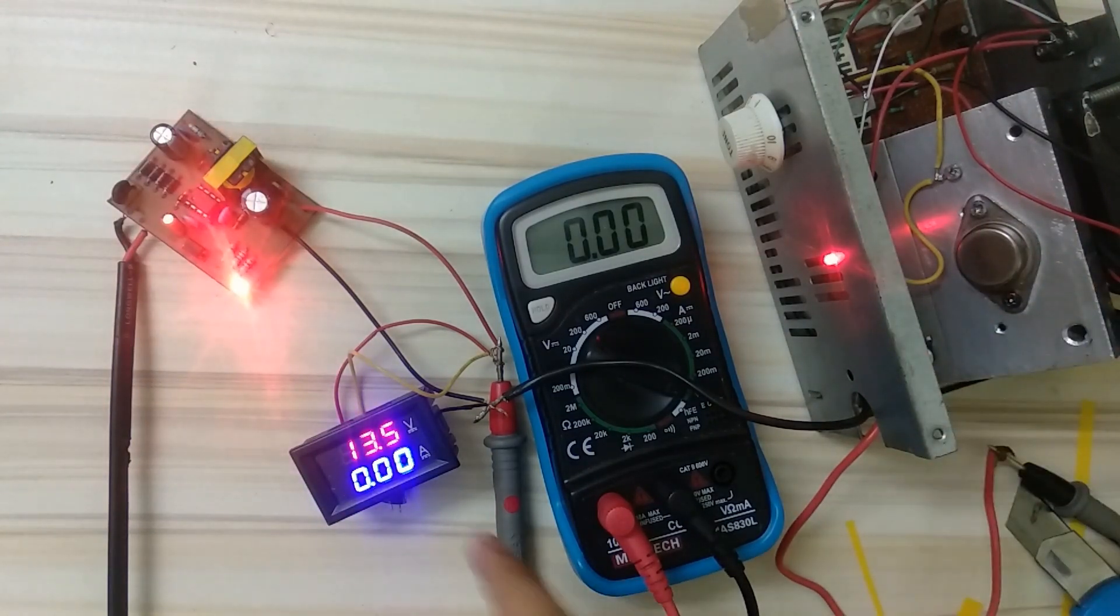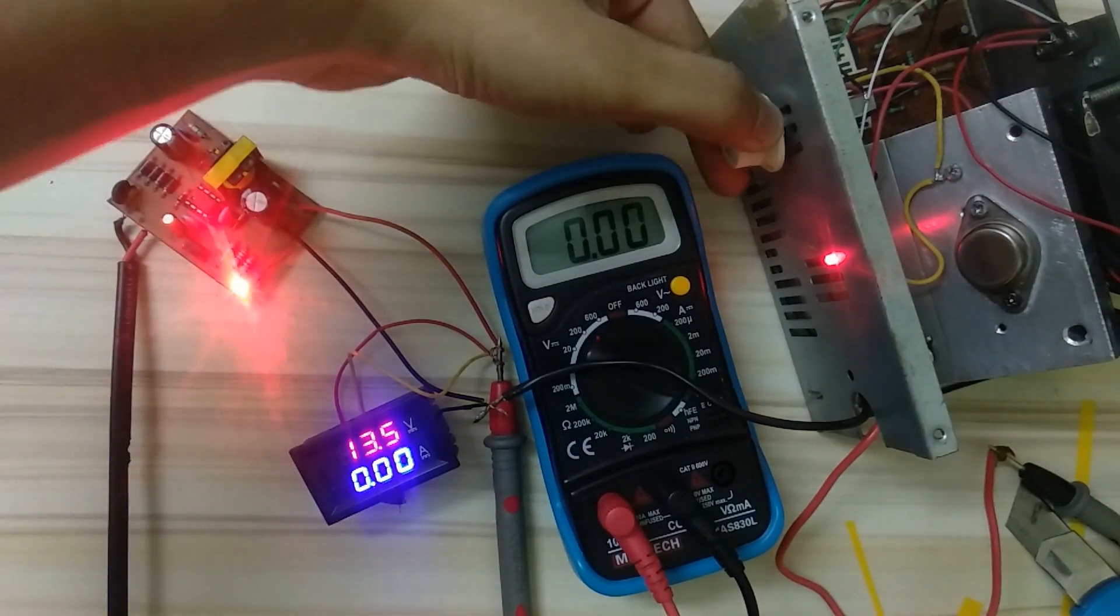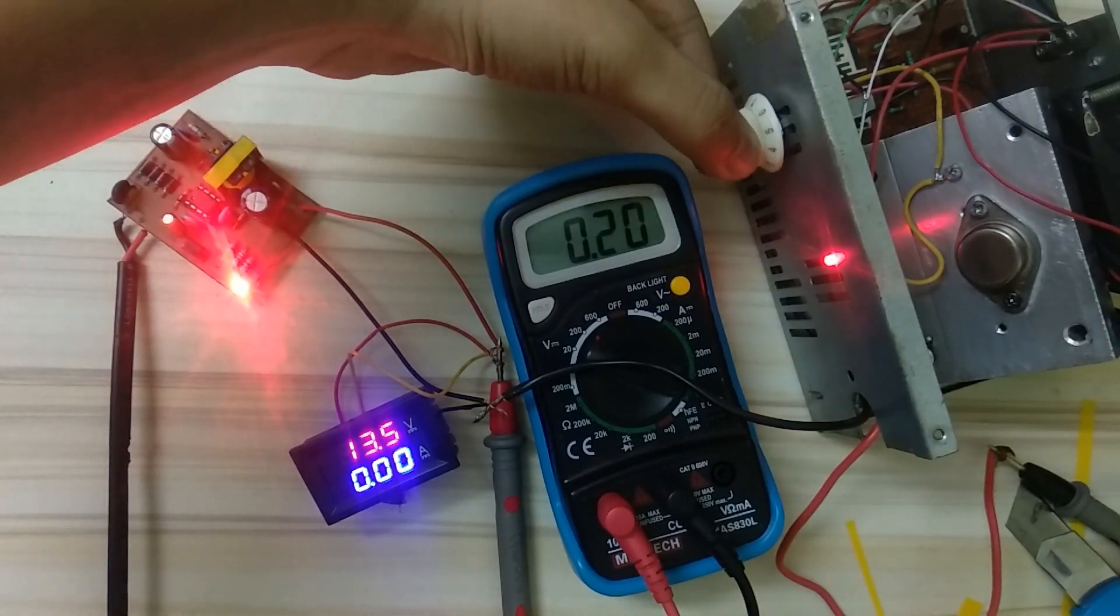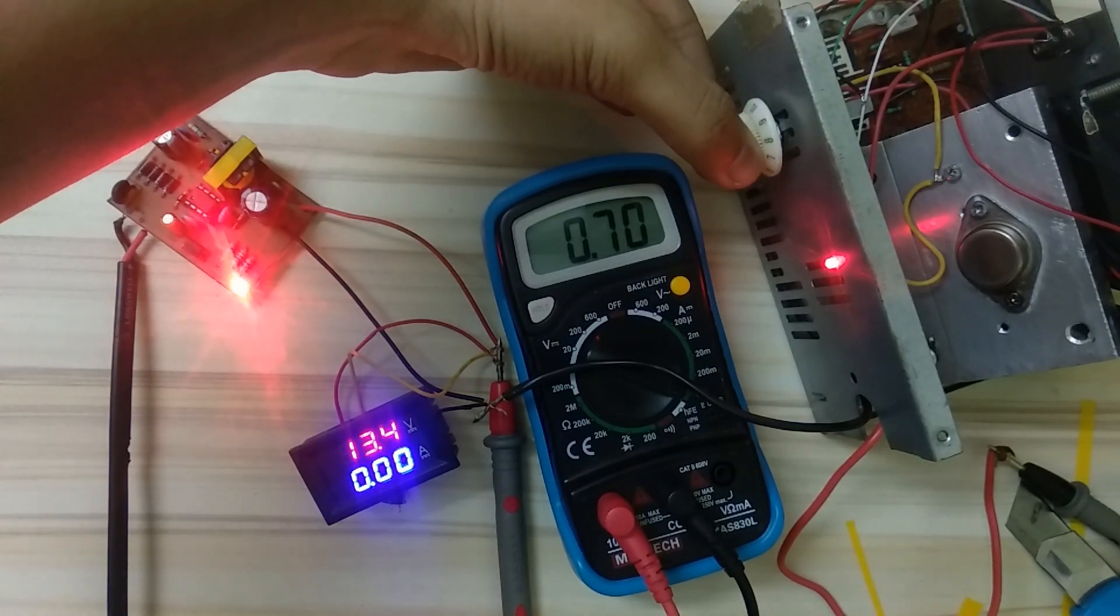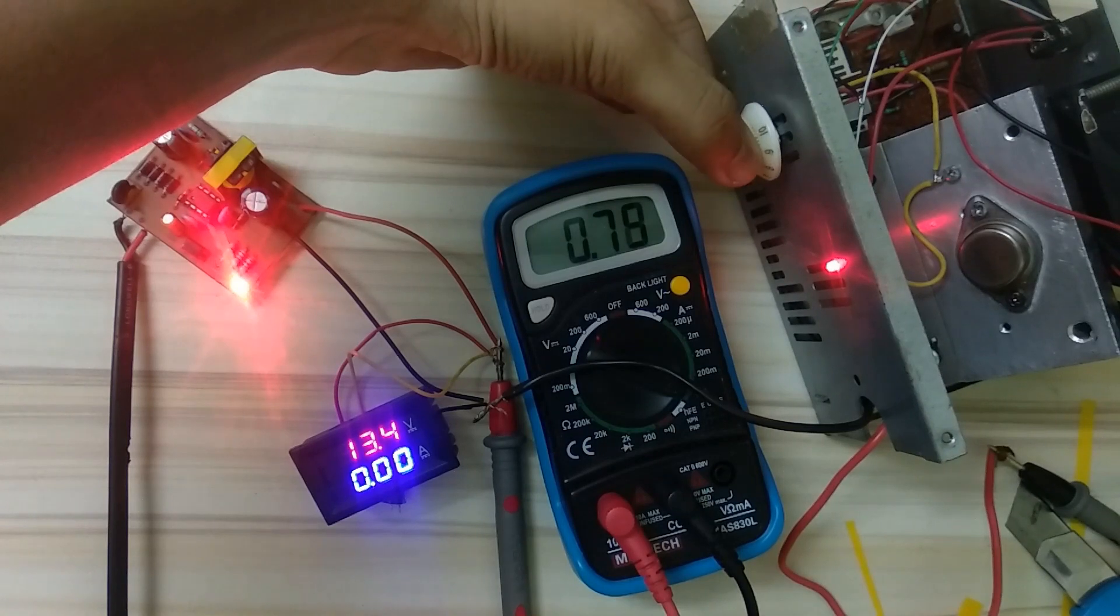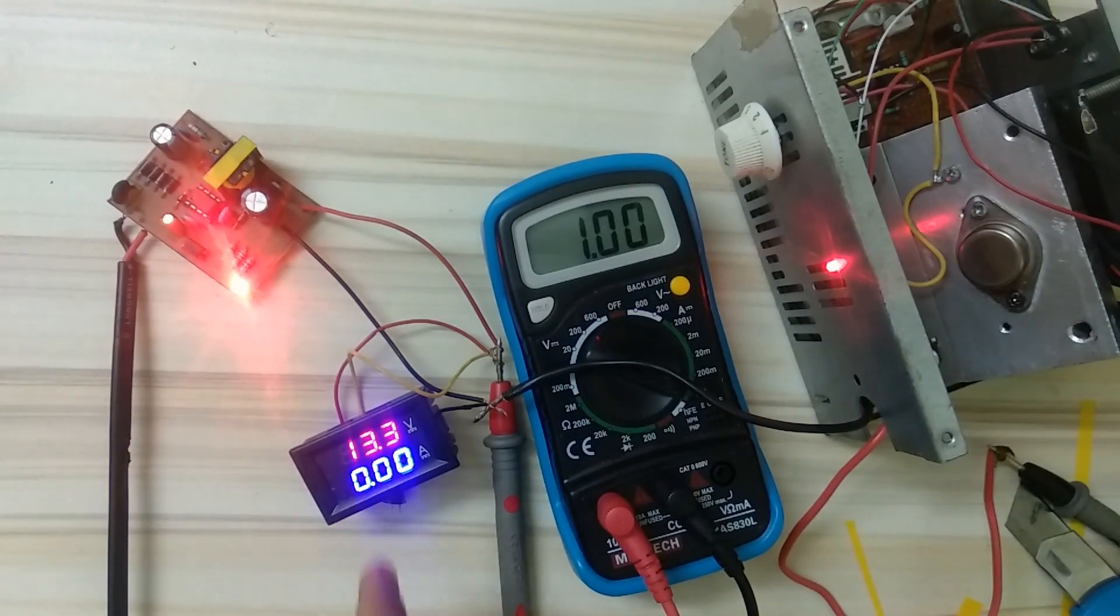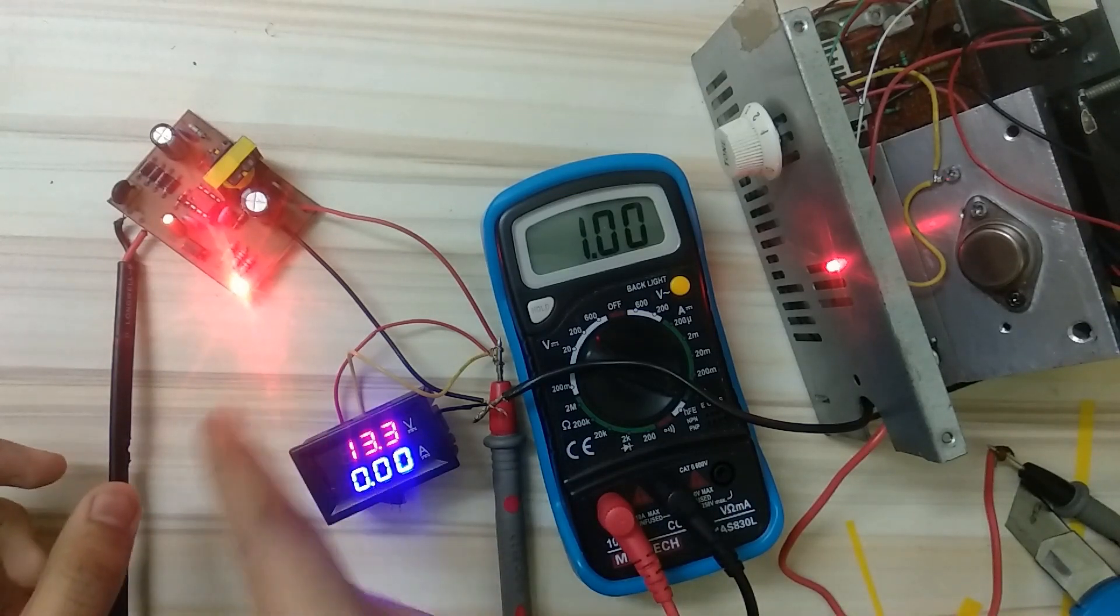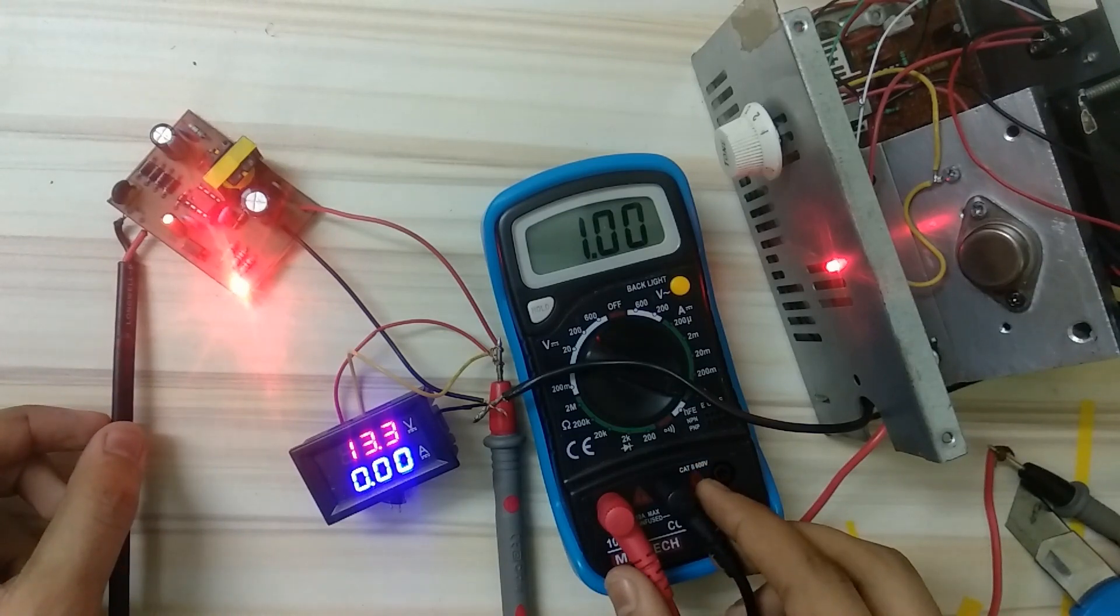As you can see the output voltage is 13.5. Now let's slowly increase the current. At around 1 amp of current the output voltage is 13.3, and the circuit does not produce any sound. It means our SMPS is working properly.